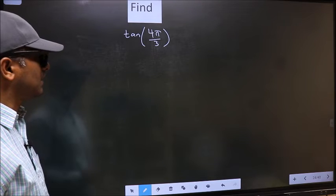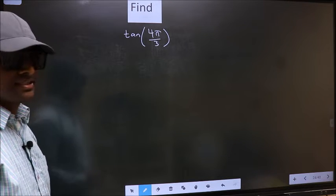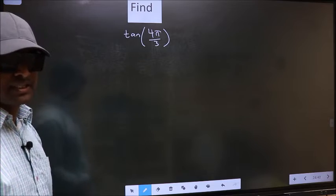Find tan 4π/3. To find this, we should follow method C.